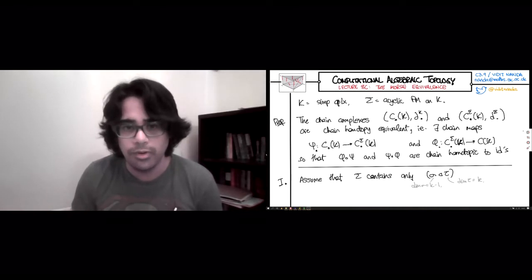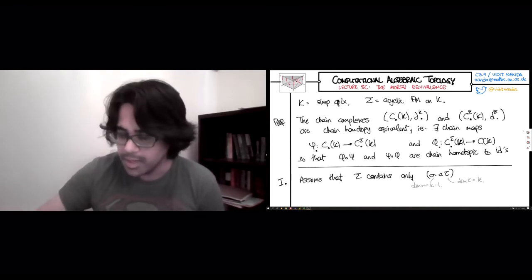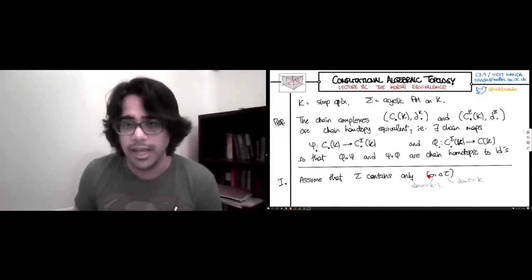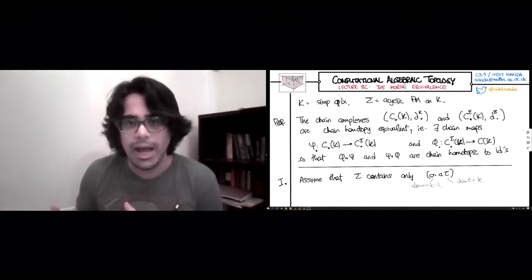So we're going to remove, so what this map psi is going to do in this simple case is just remove these two simplices, sigma and tau, from K, and this phi is going to somehow add them back. And we'll show that this is an equivalence.